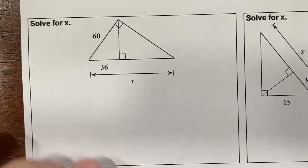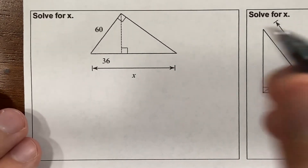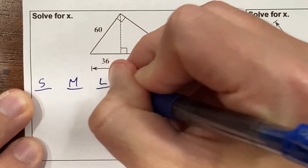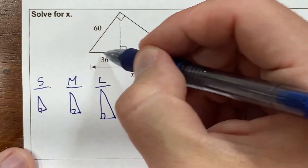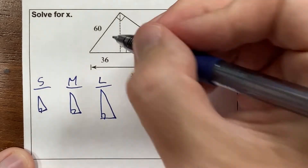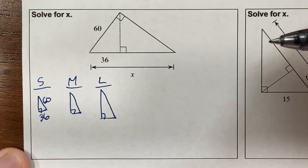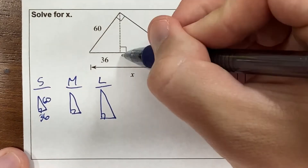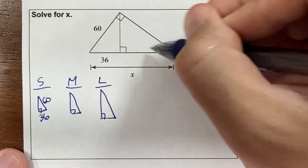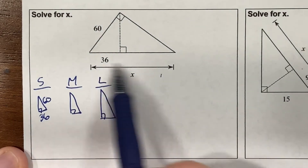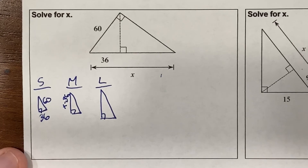Let's look at another one. I have a right triangle with an altitude — triangles within a triangle. I'll write out my small, medium, and large triangles. In the small triangle, the hypotenuse is 60 and the smallest side is 36; I'm not given the medium side. For the medium triangle, I'm not given the hypotenuse or the small side, but the medium side would be x minus 36.